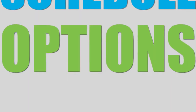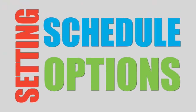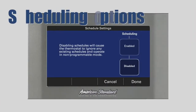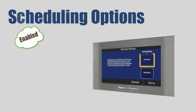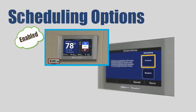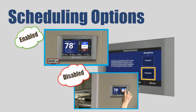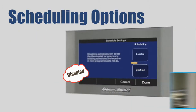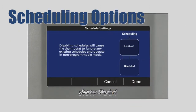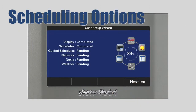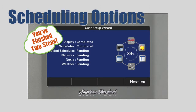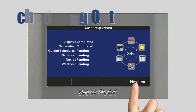Setting Scheduling Options. Now, you'll set the control's scheduling options. When scheduling is enabled, your control will change target temperatures automatically at predetermined times throughout the day. When scheduling is disabled, you will manually change target temperatures. To enable scheduling, select Enable and press Done. The status screen now indicates that you have completed two of six steps in the user setup wizard. To continue, press Next.